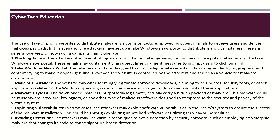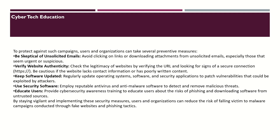The fifth point is exploiting vulnerabilities. In some cases, the attacker may exploit software vulnerabilities in the victim's system to ensure successful malware installation, through exploiting unpatched software or utilizing zero-day vulnerabilities. To avoid detection, attackers may use various techniques including polymorphic malware that changes its code to evade signature-based detection.